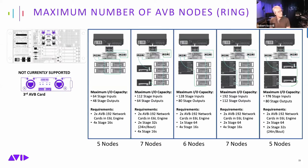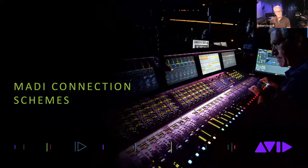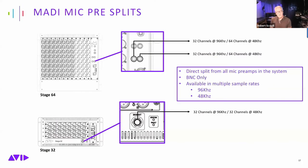Now let's talk about MADI connections. The Stage 64 and Stage 32 have built-in MADI splits — a direct split of the digitally converted mic pre going down a multi-channel MADI stream. In standard mode at 96 kHz, the Stage 64 provides two 32-channel MADI spigots. The Stage rack can also perform SRC to convert to 48k. At 48k, the Stage 64 provides two 64-channel spigots.